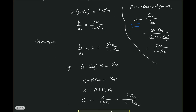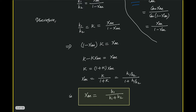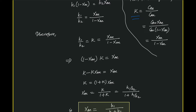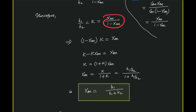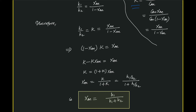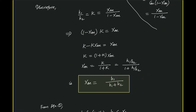To get the equilibrium conversion XAE, we need k1 and k2 values. Rearranging the rate expression, k1/k2 equals XAE/(1 − XAE), from which XAE = k1/(k1 + k2). So XAE can be written as (k1/k2)/(1 + k1/k2). Since k1 and k2 are already known as functions of temperature, XAE as a function of temperature is easily obtained.